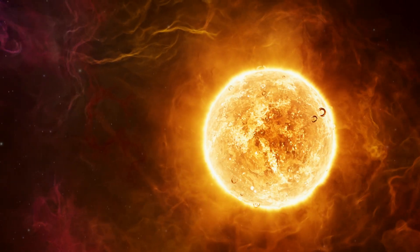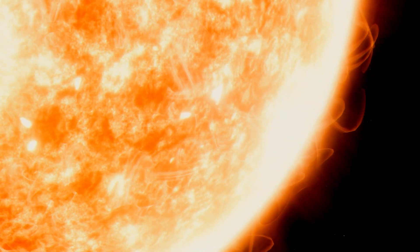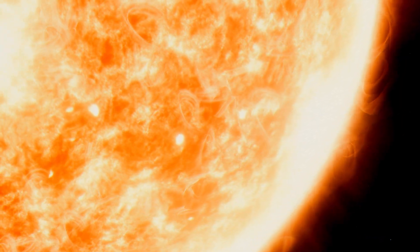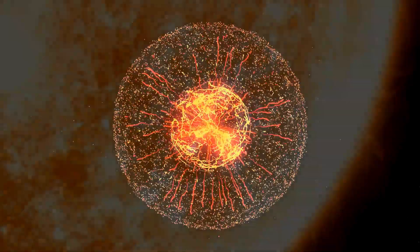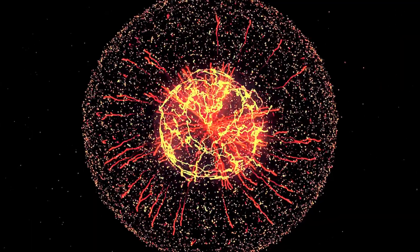But then, things will start to change. The Sun will run out of hydrogen in its core, and it will start to fuse helium into heavier elements instead. This will make the core shrink and heat up, while the outer layers grow and cool down.